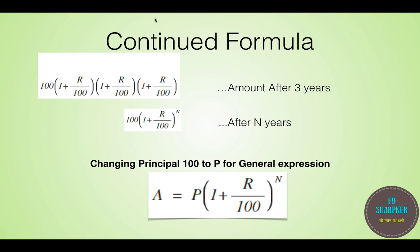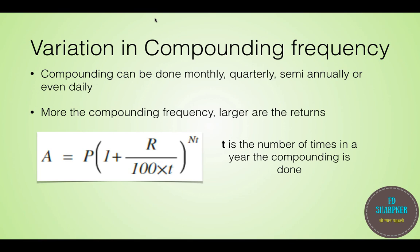Now an important thing to remember here is, we are compounding the principle after 1 year. But compounding can be done with different cycles, such as semi-annually, quarterly, monthly, and even daily. Remember, as we increase the compounding frequency, we get larger amount at the end.